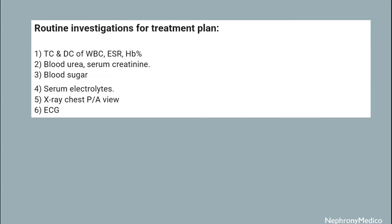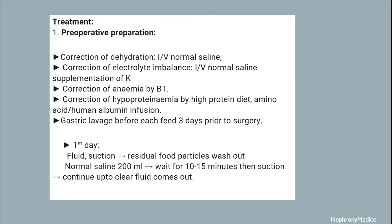Routine investigations for treatment planning include total count and differential count of WBC, ESR, hemoglobin percentage, blood urea, serum creatinine, blood sugar, serum electrolytes, X-ray of the chest posteroanterior view, and ECG.